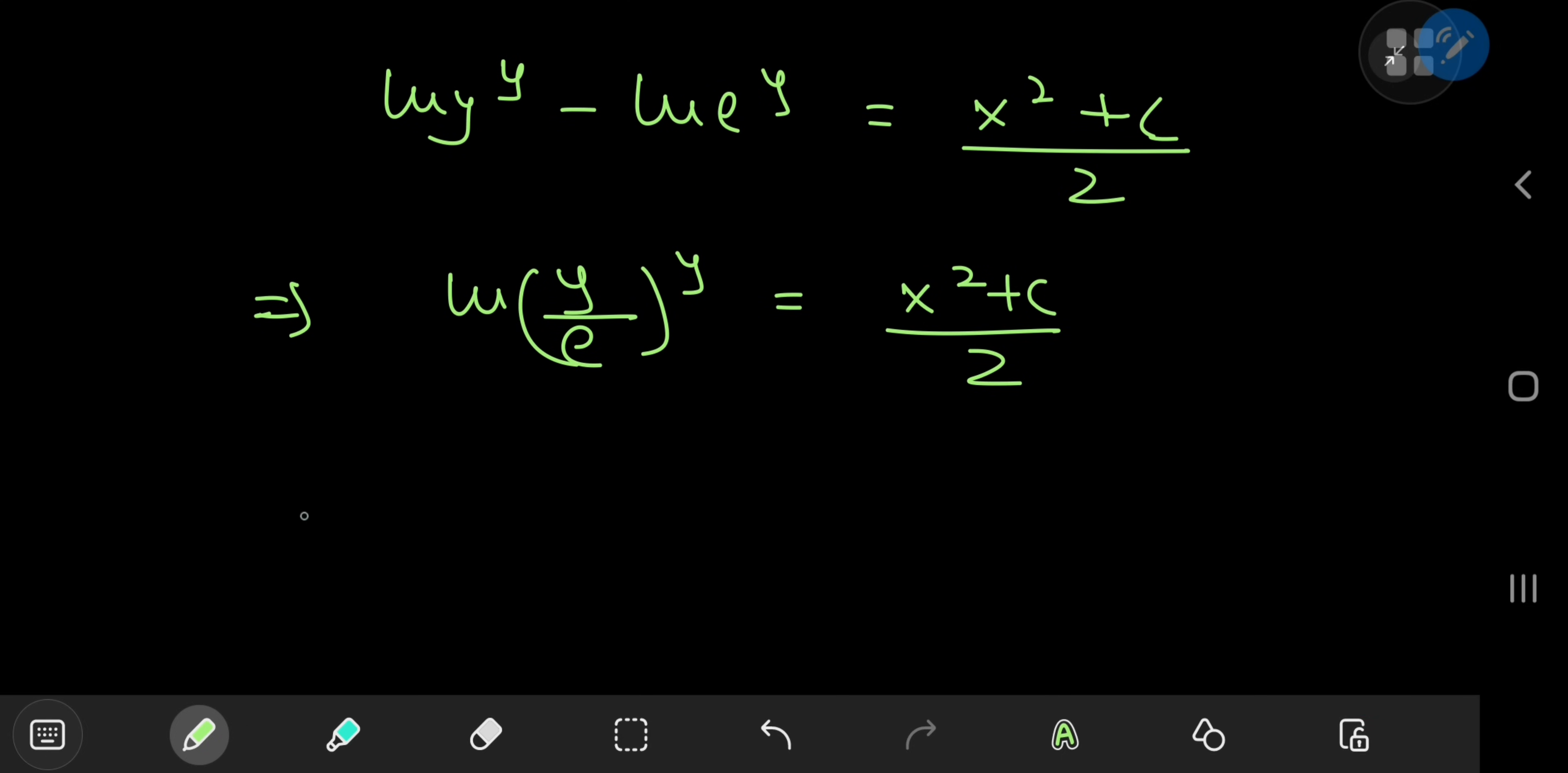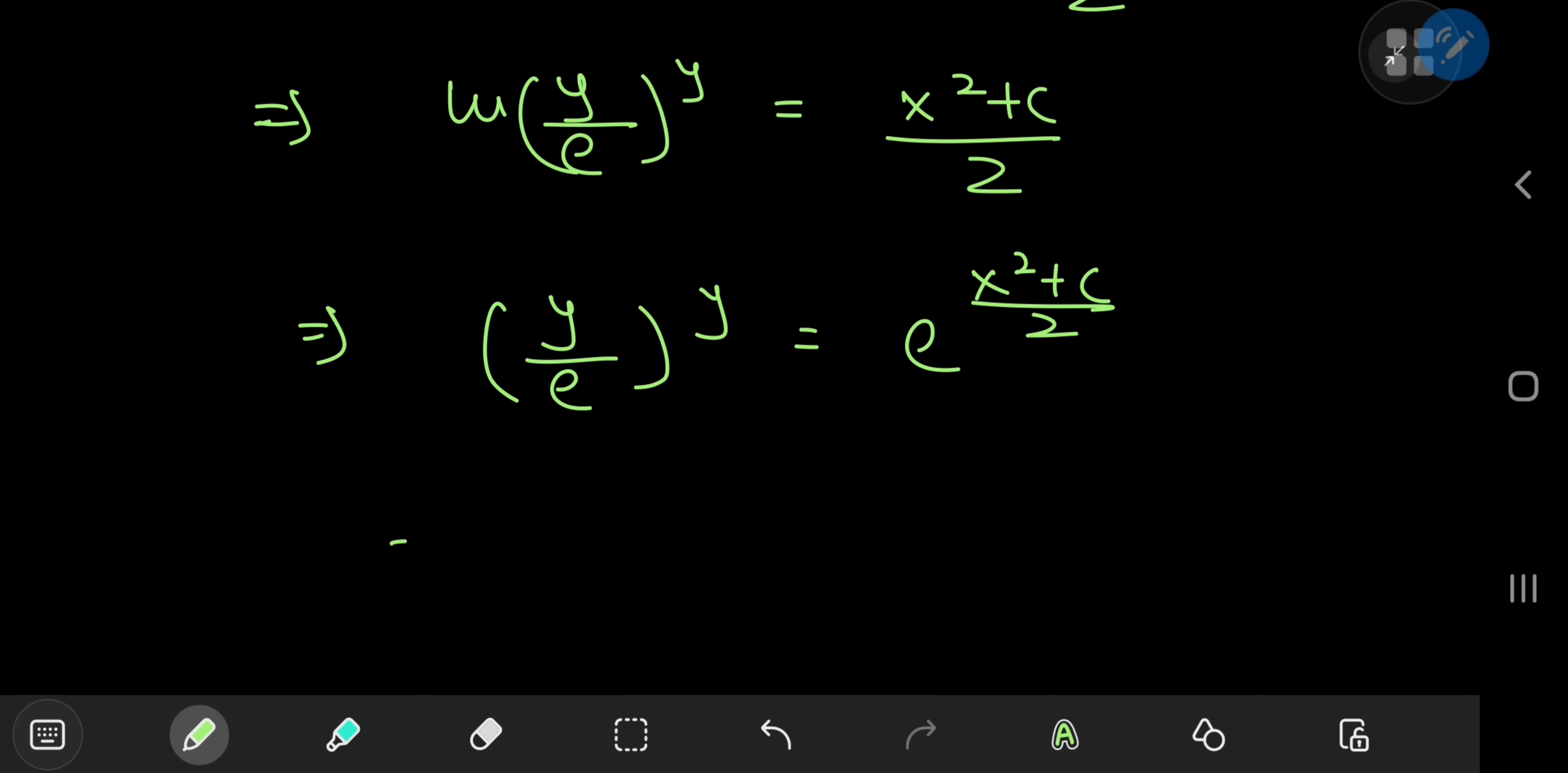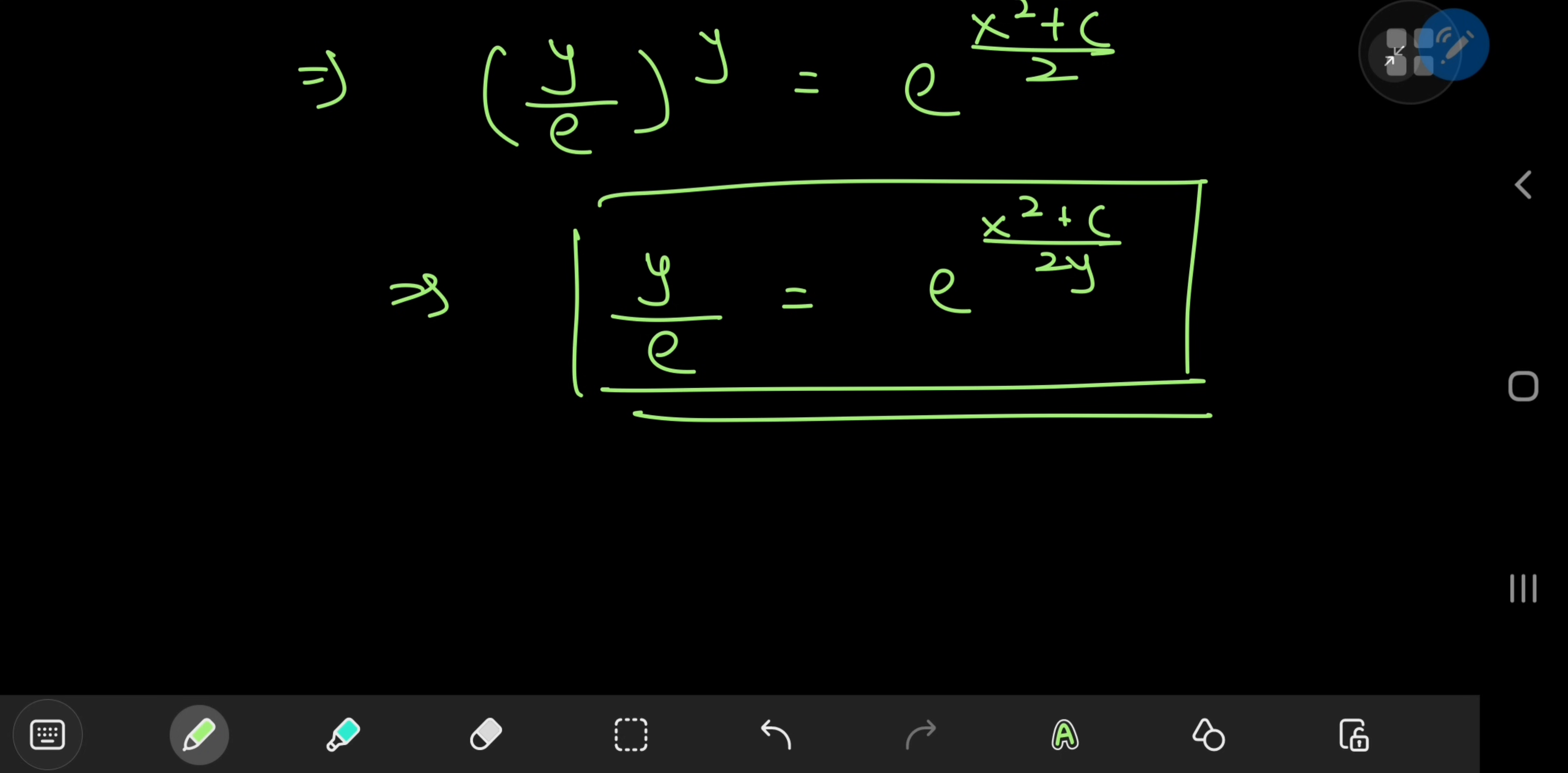So exponentiating this gives us y divided by e to the y equal to e to the (x squared plus c) divided by 2. And of course you can take the yth root of everything and write this as y/e equal to e to the (x squared plus c) divided by 2y. Which indeed looks pretty cool but how exactly do we get y explicitly in terms of x now?